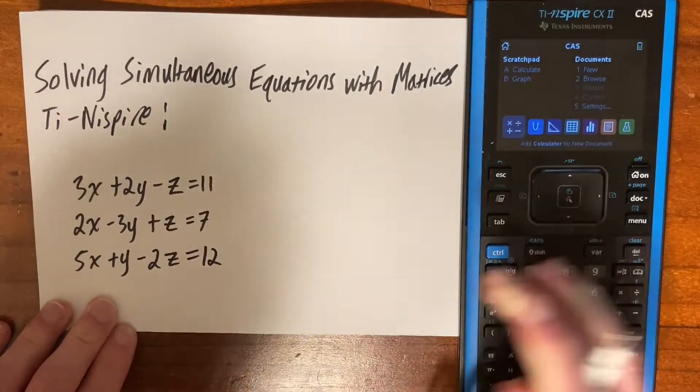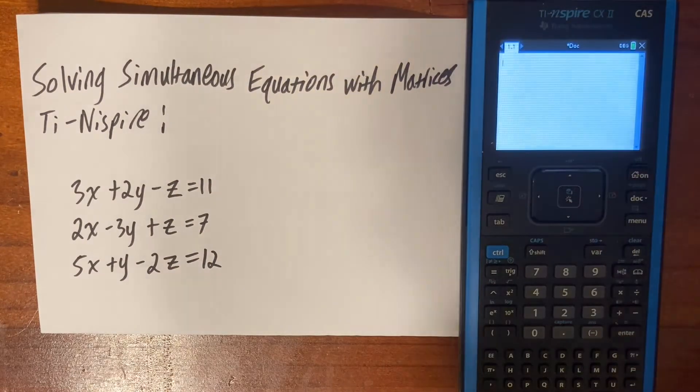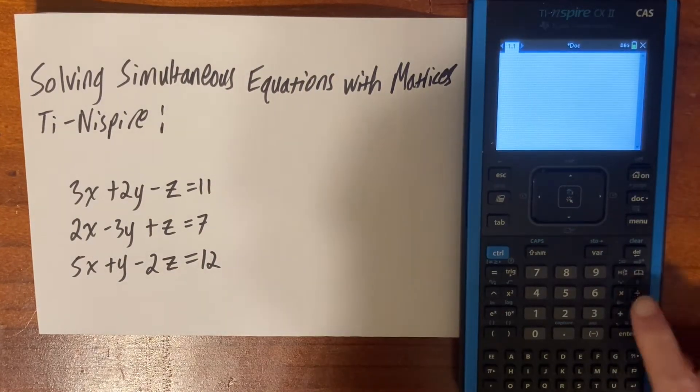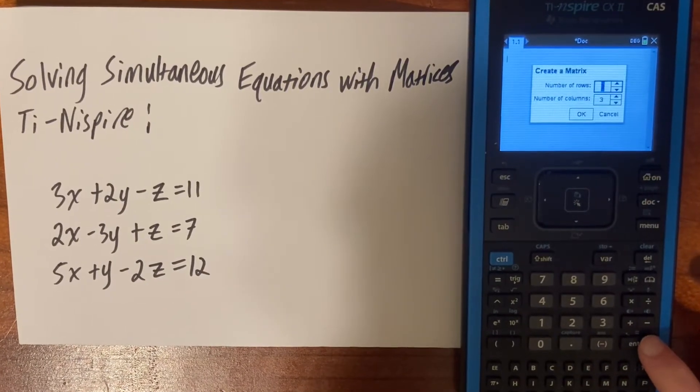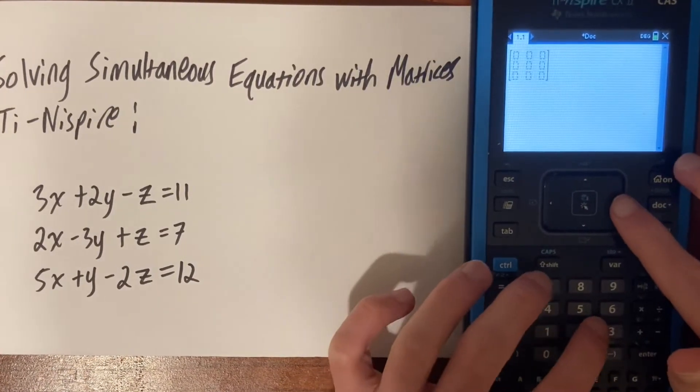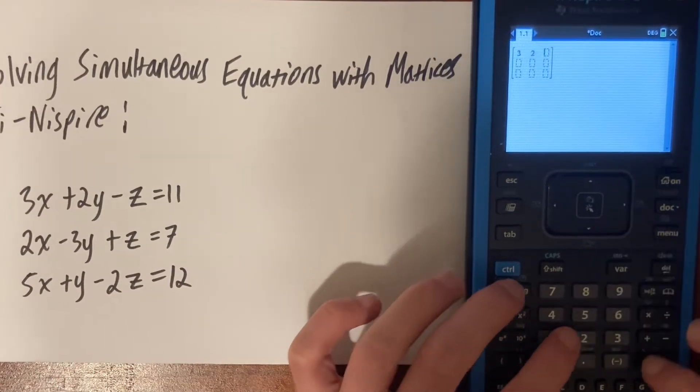The first thing you want to do is go to a calculator page. Then you're going to want to push this button here right next to this book, which will open up a lot of options. You'll choose matrices and then a three by three size one. Then you're going to put in your values.